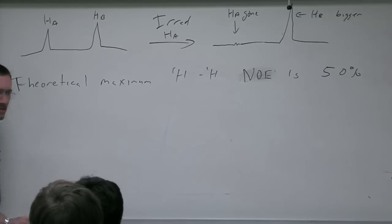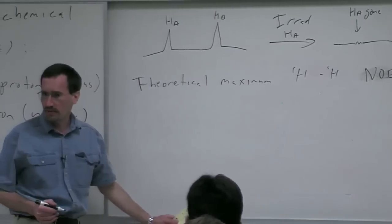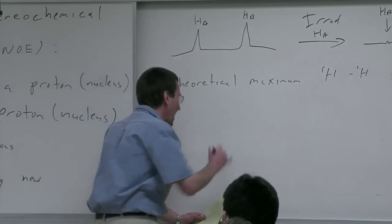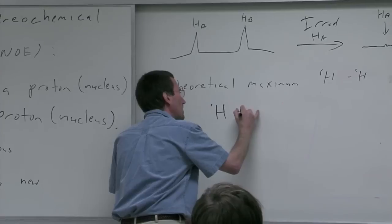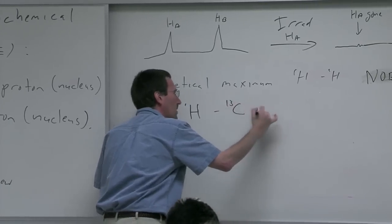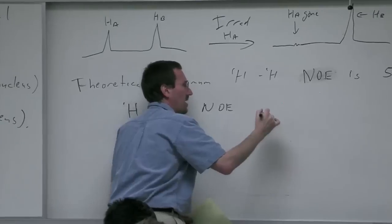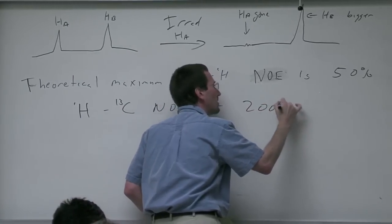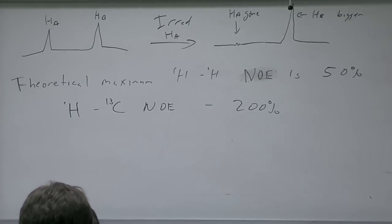Because of the difference in magnetogyric ratio between proton and carbon, you actually get a bigger effect with H1 to C13 NOE. There the theoretical effect is actually 200%, so a carbon peak can get substantially bigger.